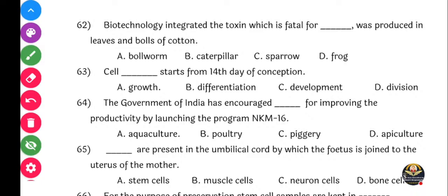Next question: Biotechnology integrated the toxin which is fatal for dash was produced in the leaves and balls of cotton. Yes, boll worm is the right answer, option A.